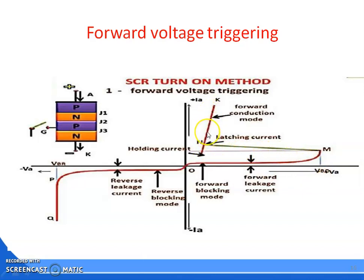Similarly, this is the reverse leakage current shown in the third quadrant of the VI characteristics curve. This line is the forward blocking mode shown in the fourth quadrant. And this shows reverse blocking mode shown in the third quadrant of the VI characteristics curve.